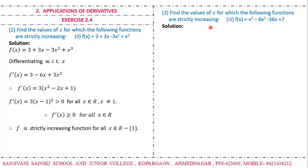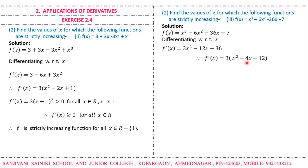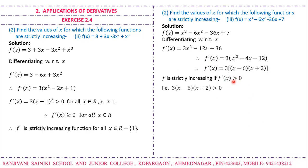Find the values of x for which f(x) is strictly increasing. Differentiating and taking 3 common, we get f'(x) = 3(x² - 4x - 12). Factorizing: the factors are (x - 6)(x + 2). For strictly increasing, f'(x) > 0, so 3(x - 6)(x + 2) > 0, meaning (x - 6)(x + 2) > 0.